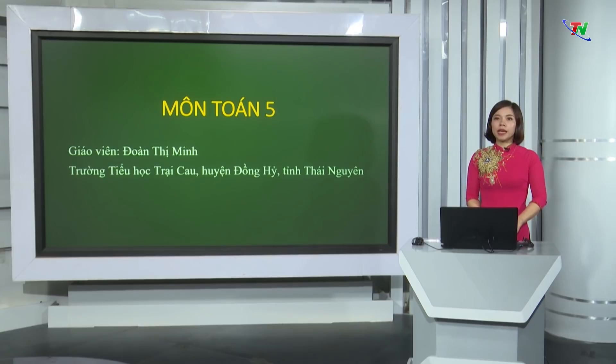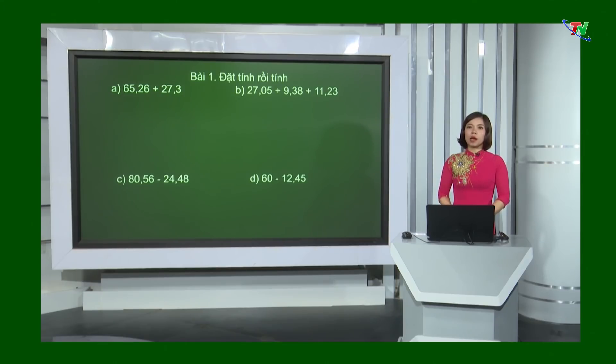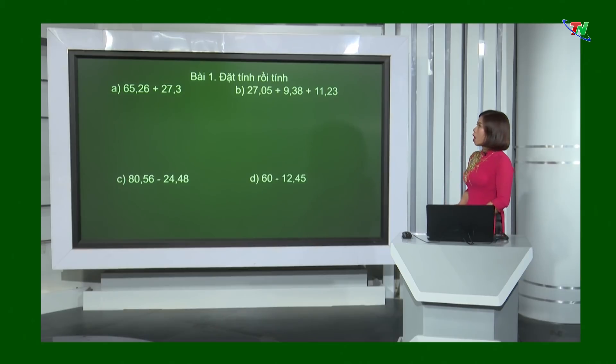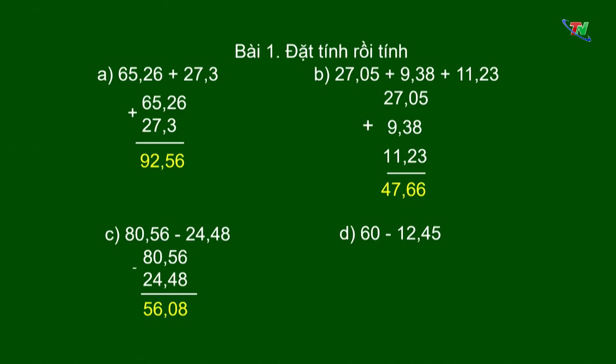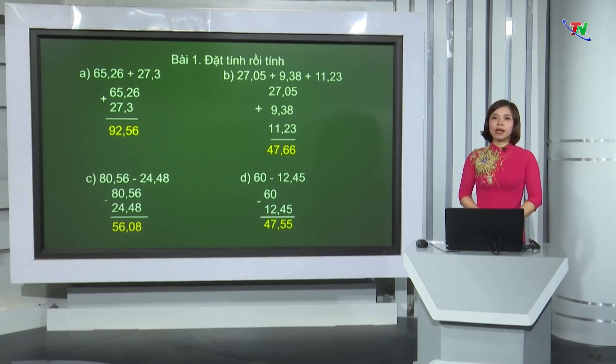Cô rất vui được đồng hành cùng các em ôn lại những kiến thức trong chương trình môn toán lớp 5. Trong tiết học trước, các em đã được ôn tập lại phép cộng, phép trừ các số thập phân và được vận dụng vào các bài tập ở nhà. Bây giờ, cô sẽ giúp các em kiểm tra lại kết quả bài làm ở nhà. Mời các em cùng quan sát lên bảng so sánh đối chiếu kết quả với bài làm của cô. Bài 1: đặt tính rồi tính, với ý A cho ta kết quả bằng 92,56. Qua bài tập 1, các em đã được củng cố về cách đặt tính và thực hiện phép tính cộng trừ các số thập phân.